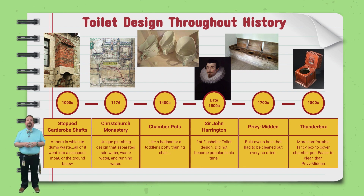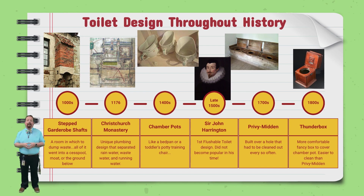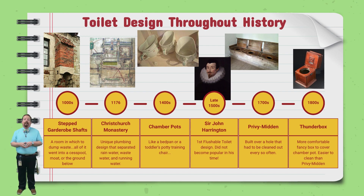In the 1800s, many were still using chamber pots, but to make it a little less gross, they'd build a wooden thunder box around it — kind of like the decorative tissue box covers we have today that make cardboard boxes look a little bit fancier. This was easier to clean than a privy midden and a little more concealed than an open chamber pot.